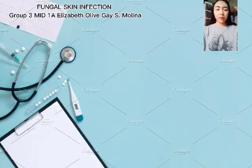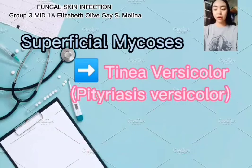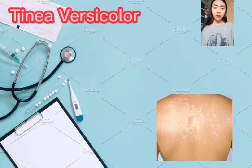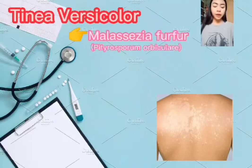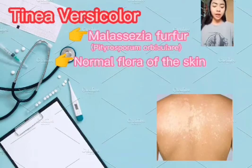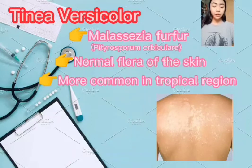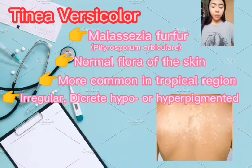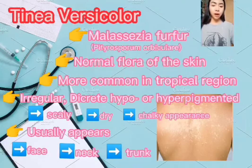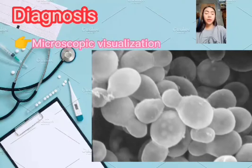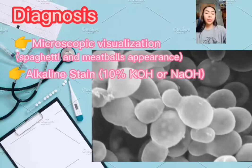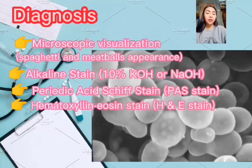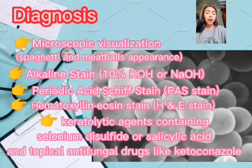Hello, I am Elizabeth. I will discuss superficial mycosis. Tinea versicolor, also known as pityriasis versicolor, is caused by Malassezia furfur, also known as Pityrosporum oviculare. M. furfur is a normal flora of the skin, particularly in areas rich in sebaceous glands. The infection is worldwide but more common in tropical regions. Lesions are irregular, discrete, hypo- or hyperpigmented macules with a dry, chalky, scaly appearance, usually appearing on the face, neck, trunk, and arms. Diagnosis is made by microscopic visualization of the spaghetti and meatballs appearance of M. furfur with KOH, PAS stain, or H&E stain. Treatment includes keratolytic agents containing selenium disulfide or salicylic acid, and topical antifungal drugs like ketoconazole.